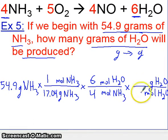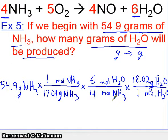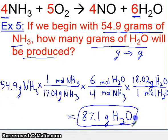Finally, going from moles to grams of H2O comes from the periodic table. One mole of H2O — if you total up oxygen and hydrogen — gives you 18.02 grams. Let's go ahead and calculate: begin with 54.9, multiply by one, divide by 17.04, multiply by six, divide by four, and multiply by 18.02. This should give you 87.1 grams of H2O, since that is what we're ending with. So this should be your final answer.